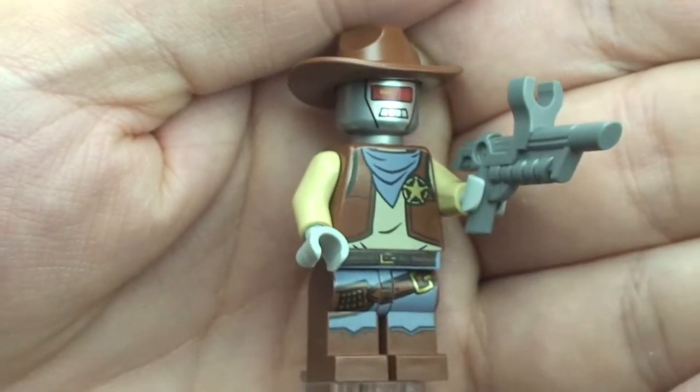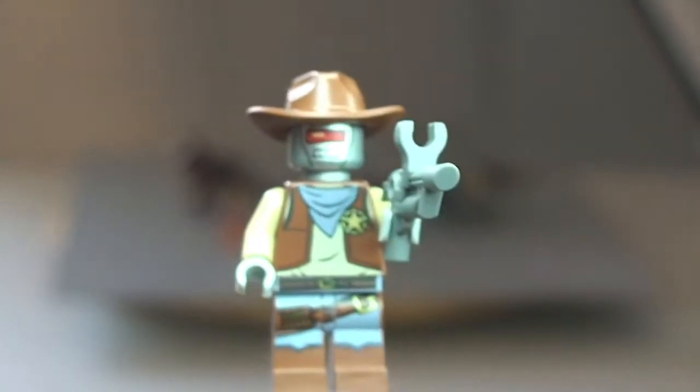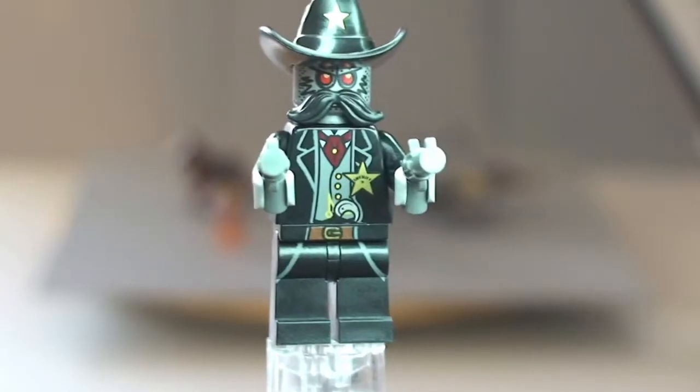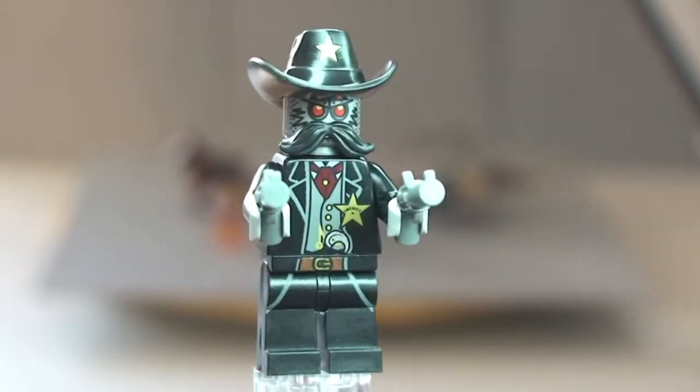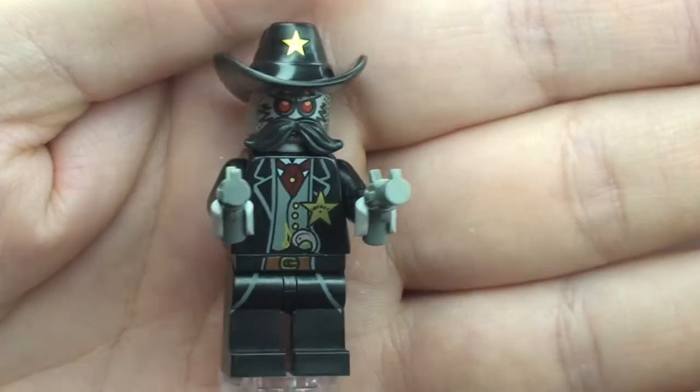That's our second minifigure the Deputron. And our final minifigure in this set which I have to say is my favorite, this is the Sheriff Not a Robot. We can see he does have some front leg printing there.